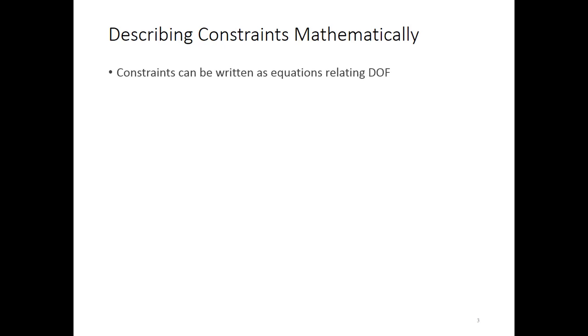Let's talk about how we describe those constraints mathematically. Specifically, we can write equations that relate degrees of freedom. That's what a constraint is. For a tied constraint, in 2D, if we want to tie, say, node 1 to node 52, as shown here, we're going to get two equations.